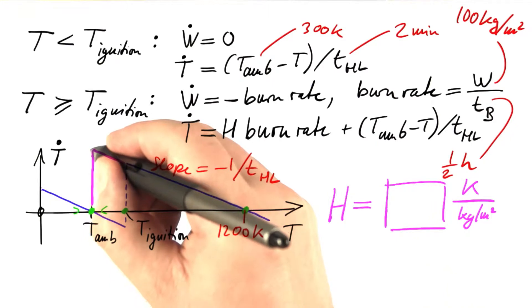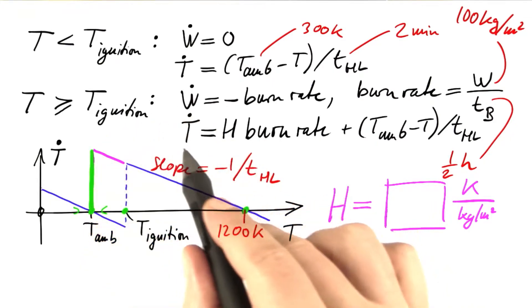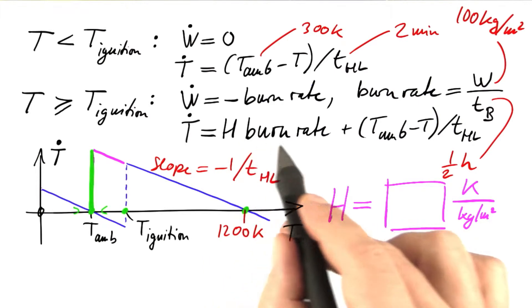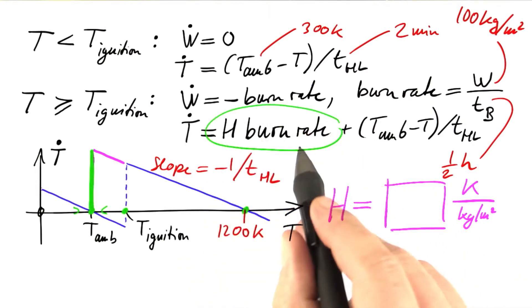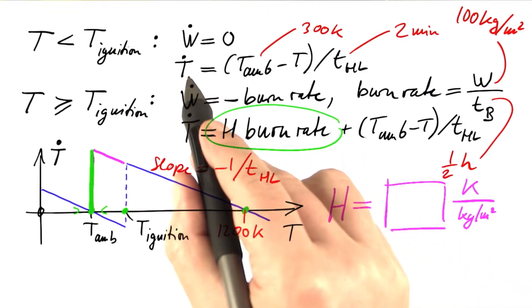We know the length of this line, which is the jump in the rate of change of the temperature, the heating value times the burning rate. This term makes the difference between burning and not burning.